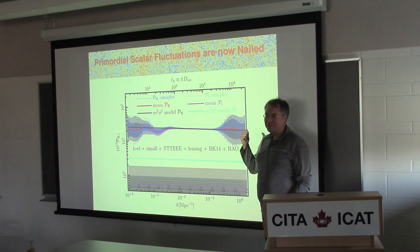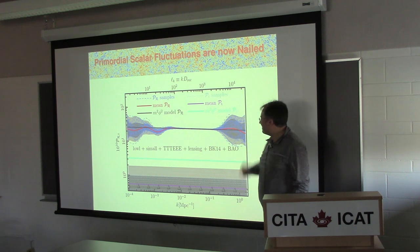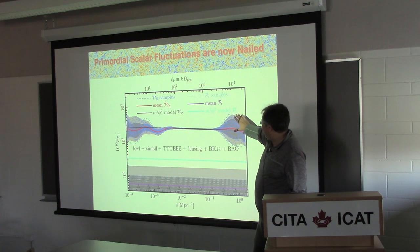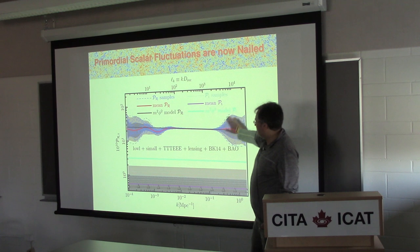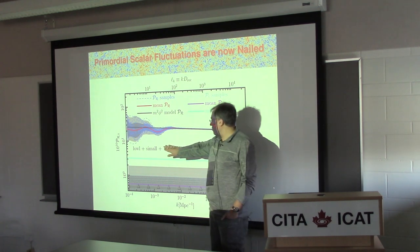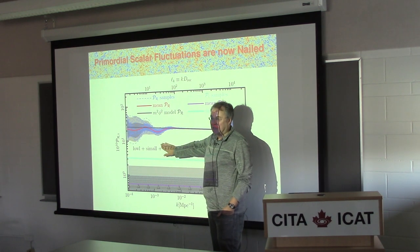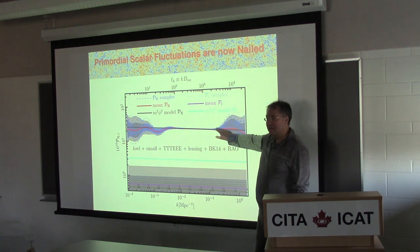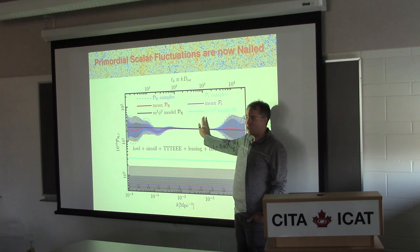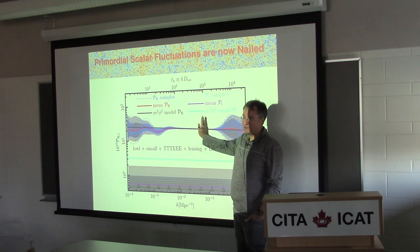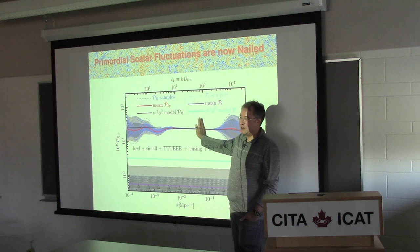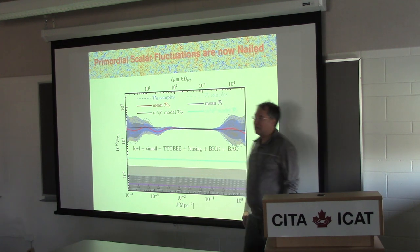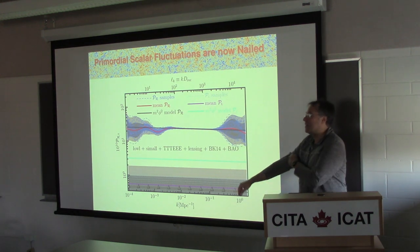I pulled this from revision control, so it's even more striking now. If you junk all the temperature data and just look at polarization maps only, it still nails it down to a straight line, except with a little bit more noise and it comes in earlier - but it still nails it to a straight line.